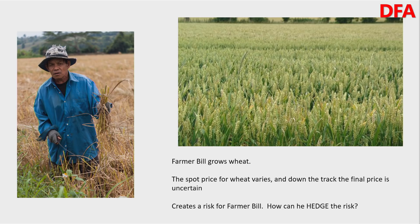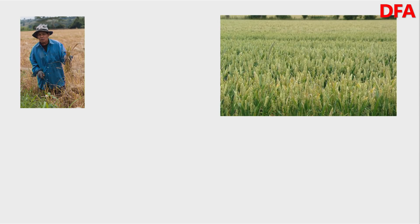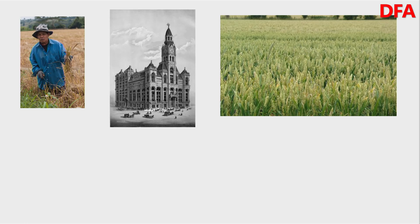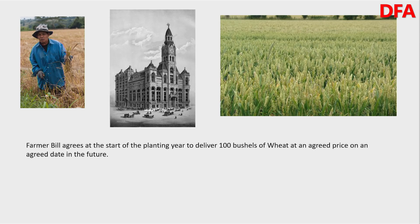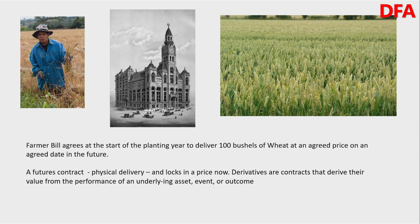And that's where derivatives come in. So Farmer Bill and his wheat has the potential to lock in an arrangement to give certainty about the price down the track. Basically, Farmer Bill agrees at the start of the planting year to deliver, let's say, 100 bushels of wheat at an agreed price on an agreed date in the future. And that agreement means that providing Bill can turn up with the 100 bushels of wheat, he will get the price that he knows and can plan accordingly. And that's a futures contract — essentially an agreement to deliver something physically down the track, but locking in a price now.